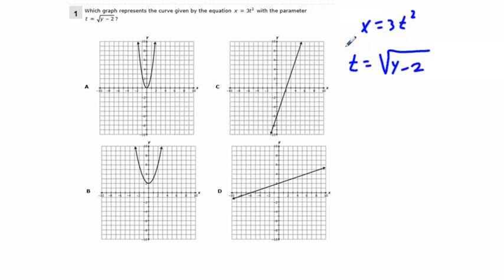And if we square both sides, we get t squared, squared, we get t squared is equal to y minus 2. And adding 2 to both sides, we get y equals t squared plus 2. So we can graph x equals 3t squared and y equals t squared plus 2.